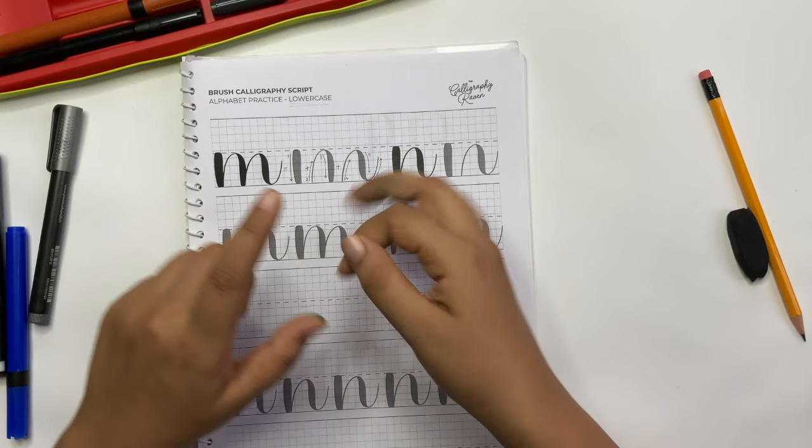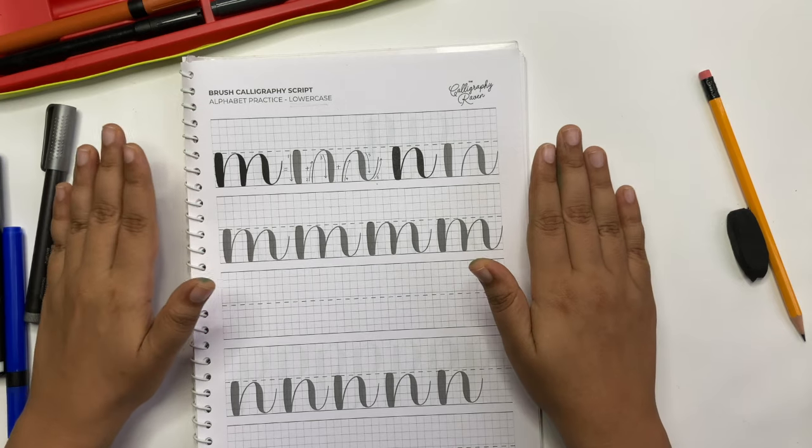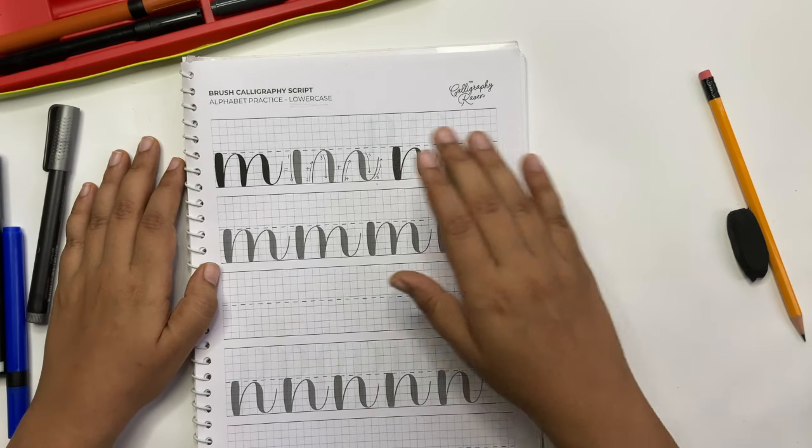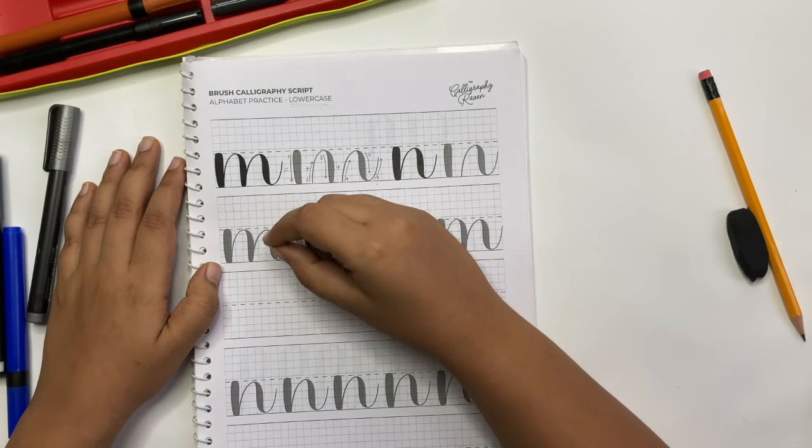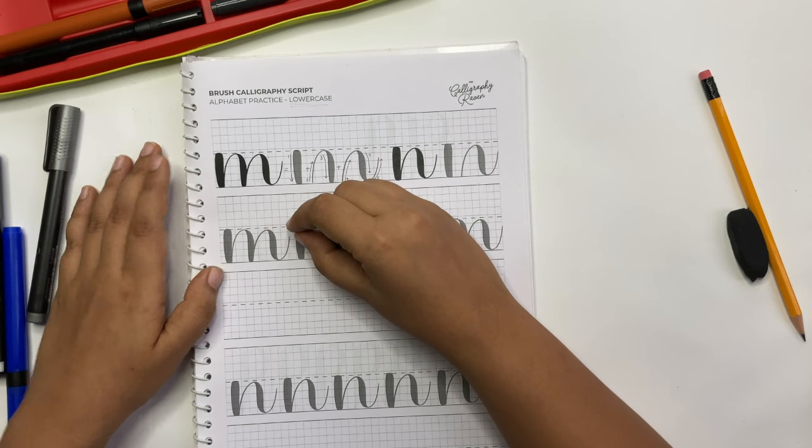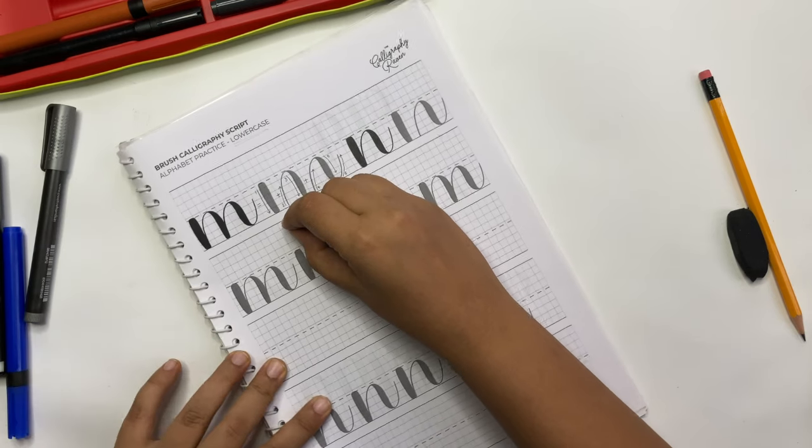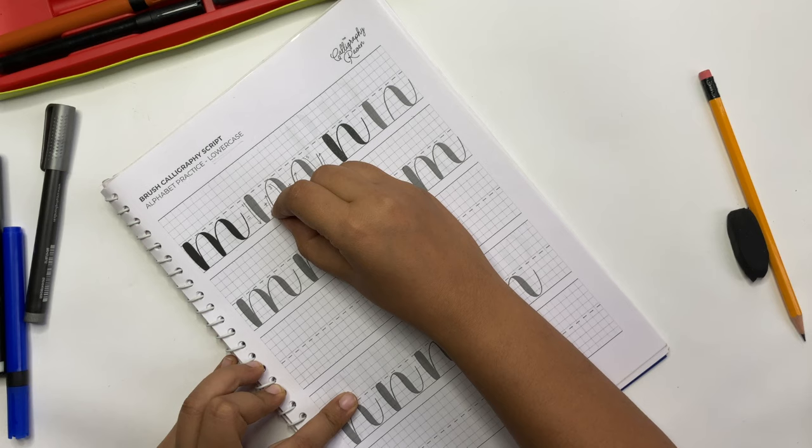Also, you might feel sore in your hand. In this case, it's better to sit straight and comfortably. Keep your hand in the most comfortable writing position. And then, rotate the paper at an angle that's convenient for you.